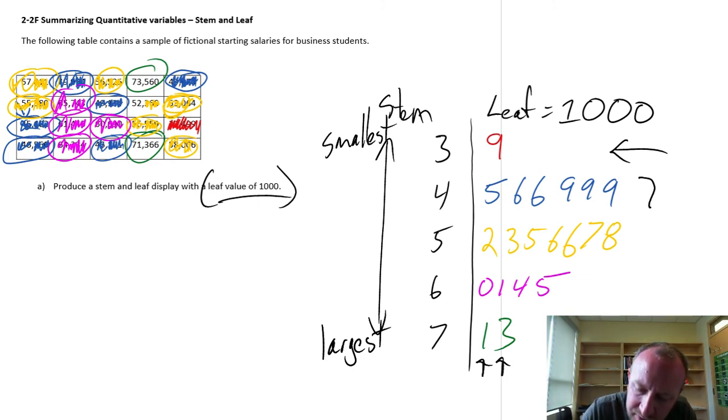And most of my observations occur in this range here, in the 40s and the 50,000s is what these correspond to. Okay, so it's a nice illustrative way of displaying our full data set.